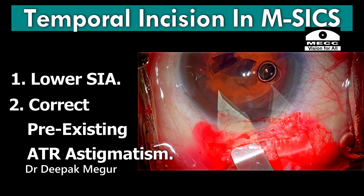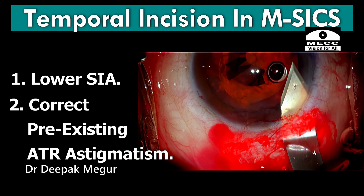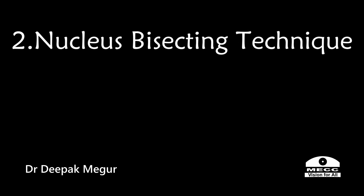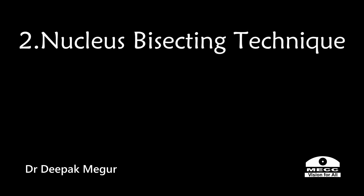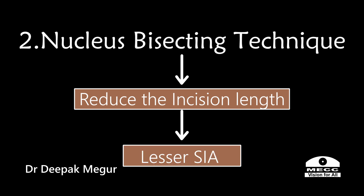And by simply shifting temporally, we have a great opportunity to correct it. Number 2, and the more difficult aspect, is to learn and master the nucleus bisecting techniques manually. This is going to reduce the incision size considerably, and as a consequence, the SIA is going to decrease significantly.